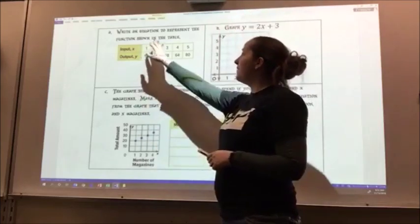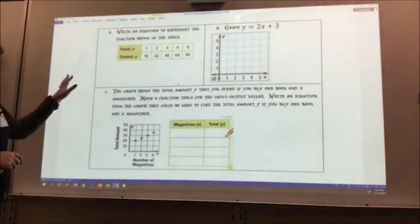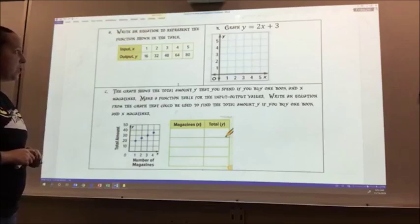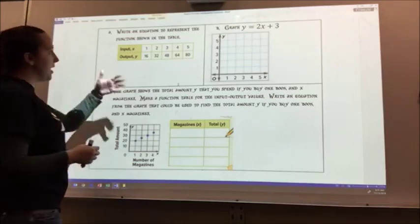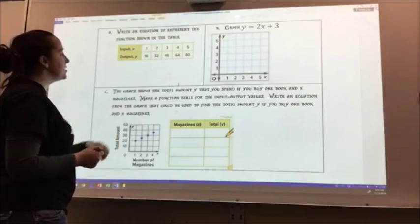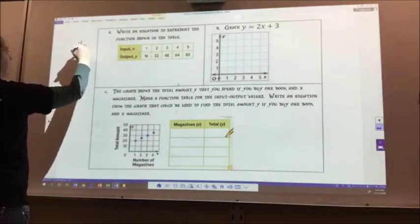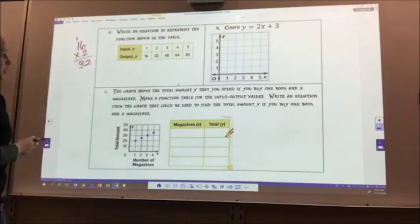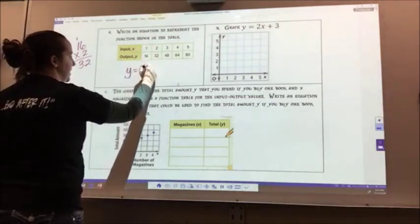For letter A, I said write an equation to represent the function shown in the table. Let's take a look at the table we have. Our input is 1, our output is 16. Our input is 2, our output is 32. Input 3, output is 48. Input 4, output is 64, and input 5, we have an output of 80. I want to think about what can I multiply each time to go up by these numbers. 1 times 16 gives me 16. Does 2 times 16 give me 32? Let's try it. 6 times 2 is 12, 2 times 1 is 2, plus 1 is 3, so 32. It does work. So each time I'm multiplying by 16. So Y equals 16X.